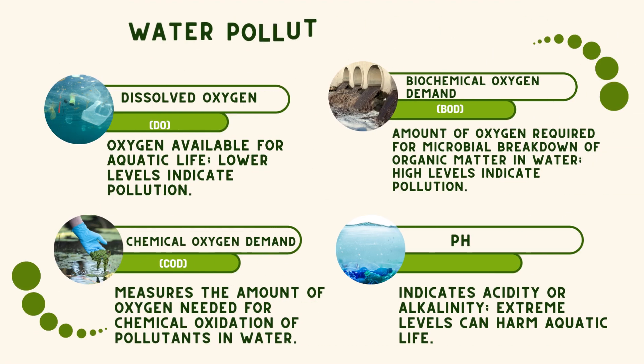Shifting our focus to water pollution, indicators like dissolved oxygen (DO), biochemical oxygen demand (BOD), chemical oxygen demand (COD), and pH help us gauge the health of water bodies. They provide vital information about the level of organic matter, the presence of pollutants, and the acidity or alkalinity of the water.